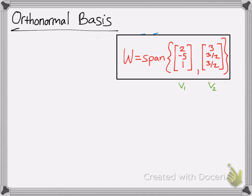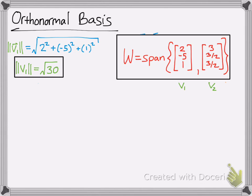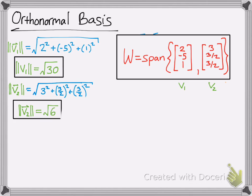So this is v1. Remember this is v2. So we just take the square root, or the square of each component, and then sum them all up and square root them. So 2 squared, negative 5 squared, 1 squared. And we should get radical 30. Do the same thing for v2. You square all the components, and then you should get radical 6 here.